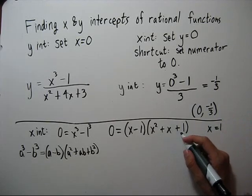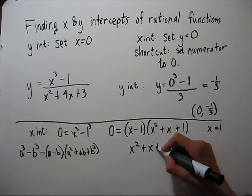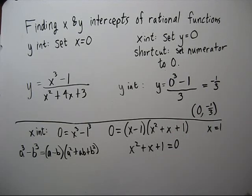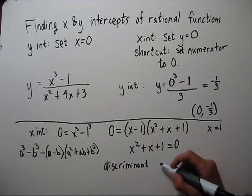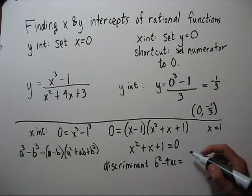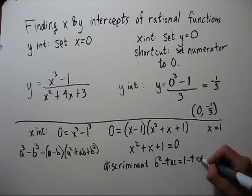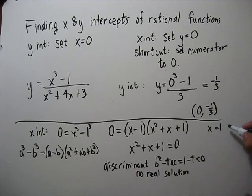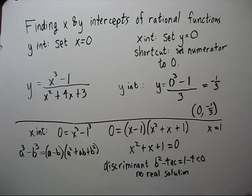Now let's look at this one. If we set this to zero, it doesn't factor nicely. Rather than go through the whole quadratic formula, let's look at the discriminant. So b squared minus 4ac. We're going to have one minus four, which is less than zero. So that means there's no real solution. So one is the only solution to zero equals x cubed minus one. Therefore, our x intercept is going to be one, zero.